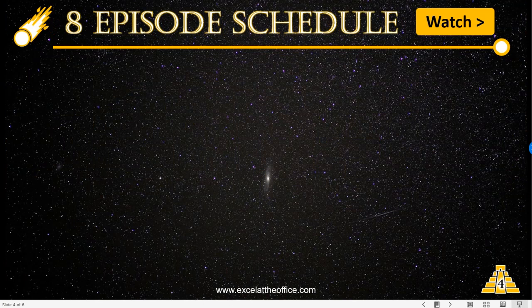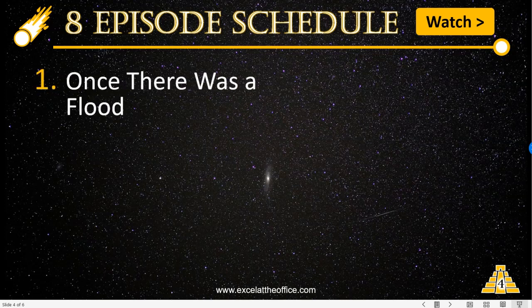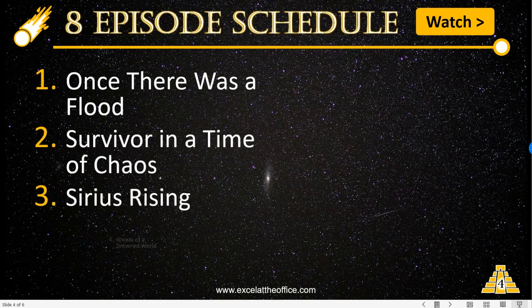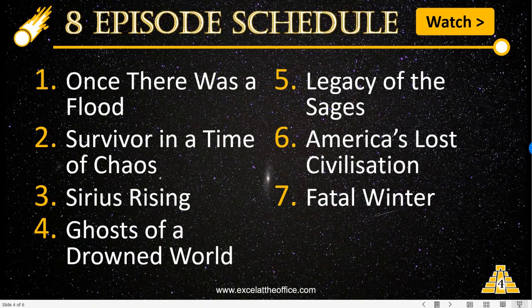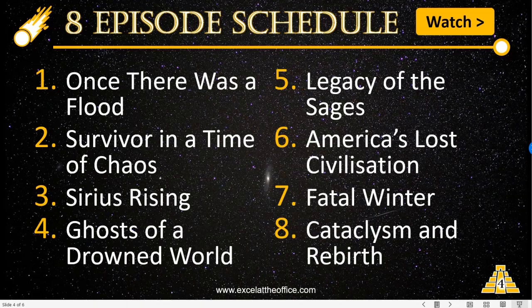If you wanted a bit of an overview of the schedule, on this slide I've used the standard heading and footer outline, but this time done it in a manner where you've got bullet points with two columns of information. I've used this to list the episode schedule of the eight episodes. The titles are really intriguing and enticing, very much like Graham's books — they just make you want to read more and further, really engaging.